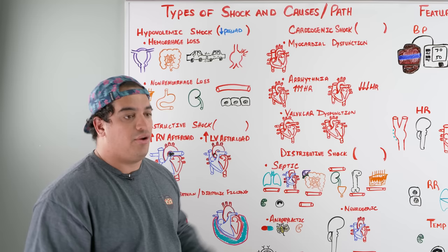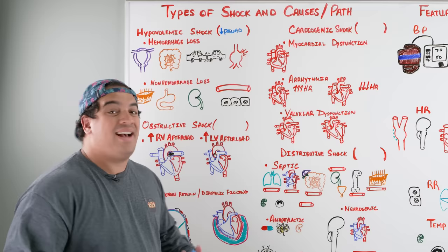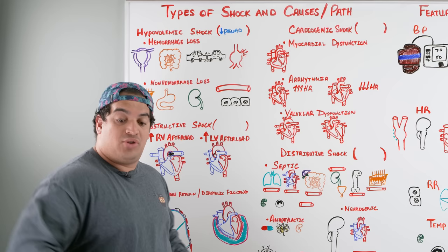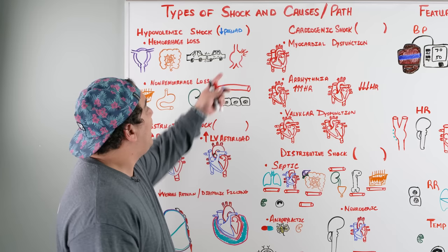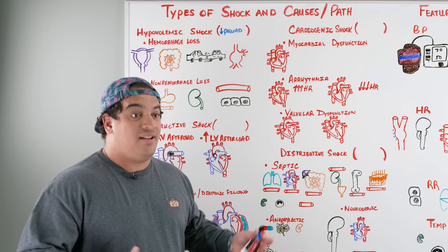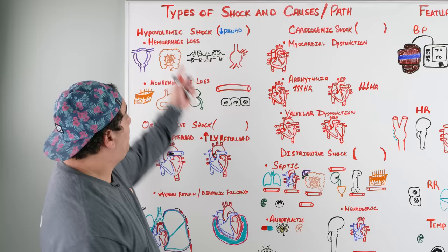When you lose blood volume, you can lose it through hemorrhage. This includes postpartum hemorrhage, massive GI bleeds (upper or lower), retroperitoneal bleeds, internal or external bleeding from massive trauma, or a ruptured abdominal aortic aneurysm — all of which can cause a massive reduction in total blood volume.